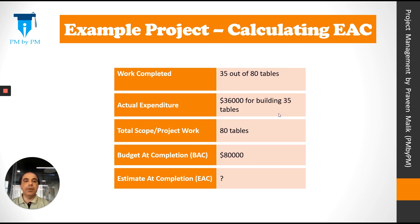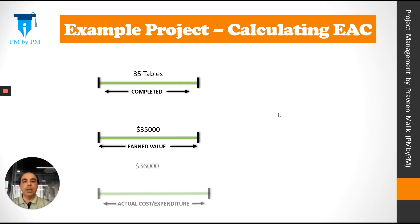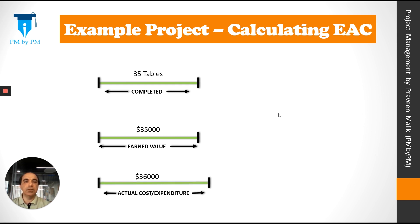In our example project, we have already completed 35 out of 80 tables and spent $36,000. We have to complete a total of 80 tables, so we need to calculate how much money would be needed. Let's calculate it using a series of pictures. We have already completed 35 tables; our earned value is $35,000 and actual cost is $36,000.